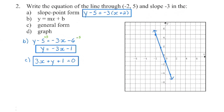We begin with y minus the y-coordinate equals the slope times x minus the x-coordinate. Minus a negative becomes a positive — that's slope-point form. For slope-intercept form, distribute the negative 3 into the brackets: negative 3 times positive 2 is negative 6. Then add 5 to both sides, giving a y-intercept of negative 1. Check: it's a negative slope so the graph falls left to right, the y-intercept is negative 1, and it passes through negative 2, 5.